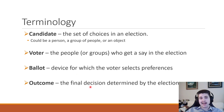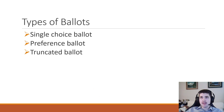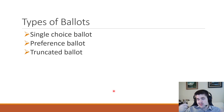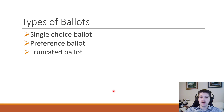Obviously we want to know the outcome — who's going to be elected, or what type of pizzas are we going to buy. The outcomes could be a single winner, like who's going to be the president, or there could be multiple winners like multiple senators or multiple types of pizzas. We could also rank them all — first choice, second choice, third choice — when relevant.